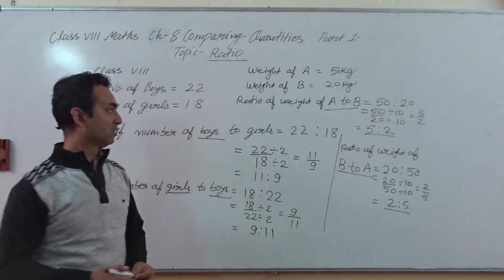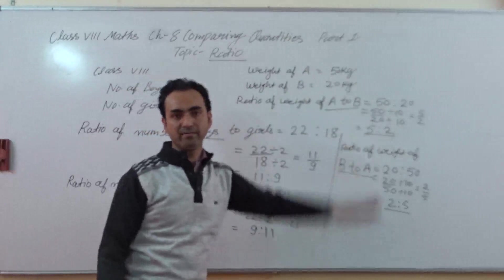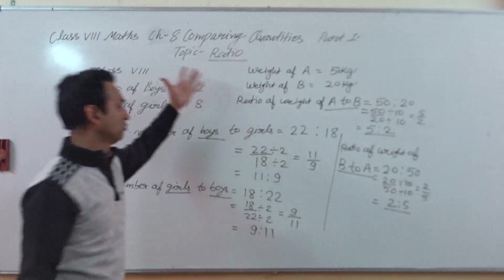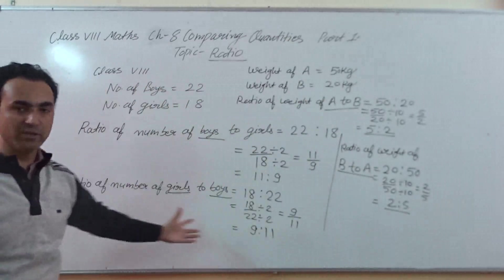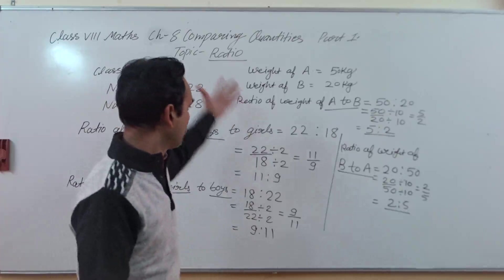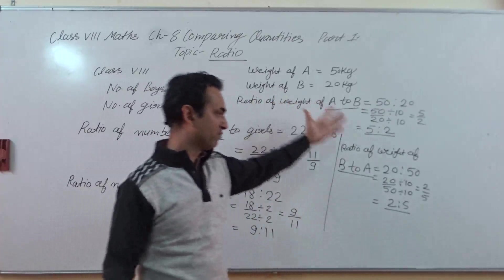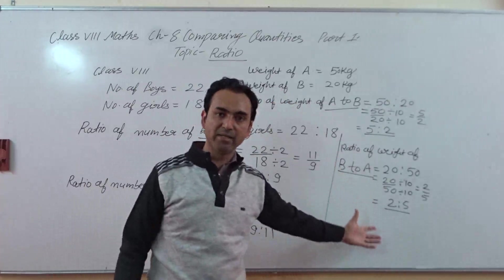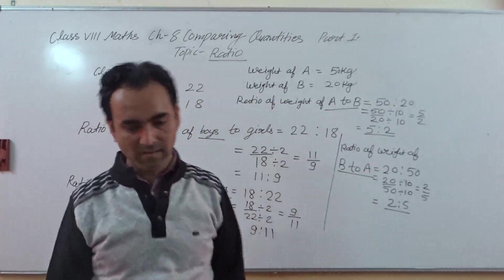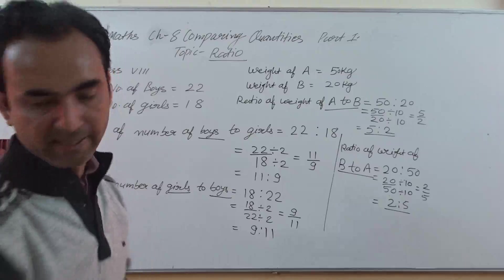So you can see the ratio of weight of A to B is 5 ratio 2, and B to A is 2 ratio 5. It means the sequence is very important in ratio. I think you have understood how to find the ratio, what is the meaning of ratio, and the method to find it. Now let's take another topic, which is percentage.